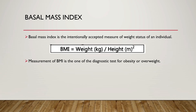Basal Mass Index is the internationally accepted measure of weight status of an individual. In order to calculate the BMI, the formula used is: BMI equals weight in kg divided by height in meter square. The measurement of BMI is one of the diagnostic tests for obesity or overweight.